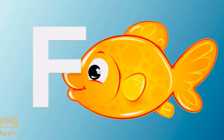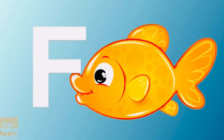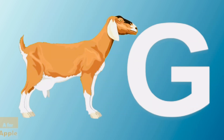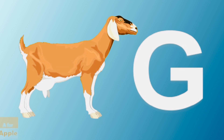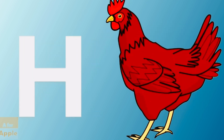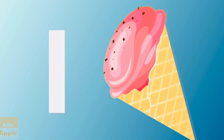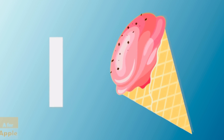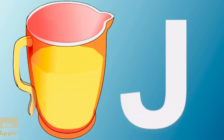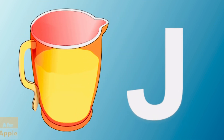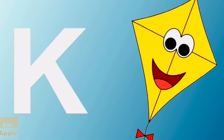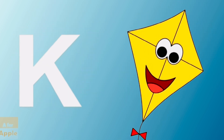F for fish, G for goat, H for hen, I for ice cream, J for jug, K for kite.